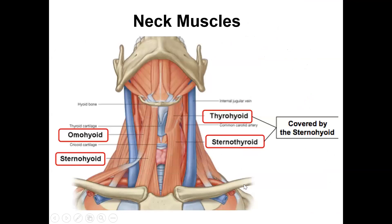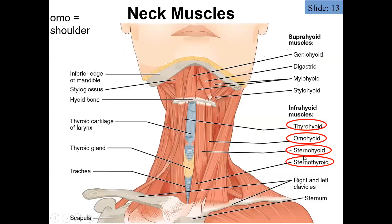We can see a better view of the sternocleidomastoid here. It goes from the mastoid process to the sternum — specifically the manubrium of the sternum — and the lateral body attaches to the clavicle.